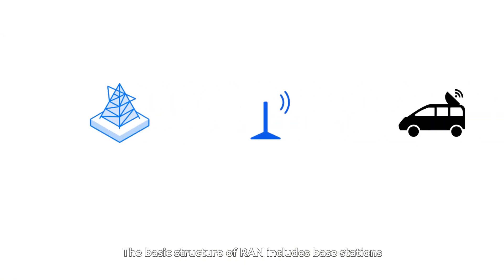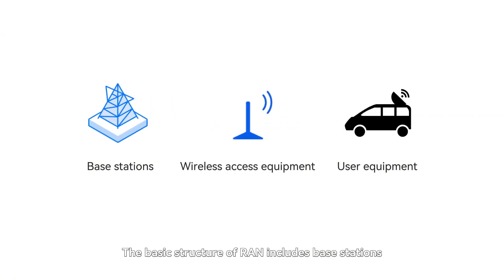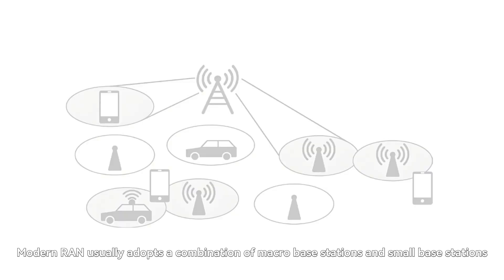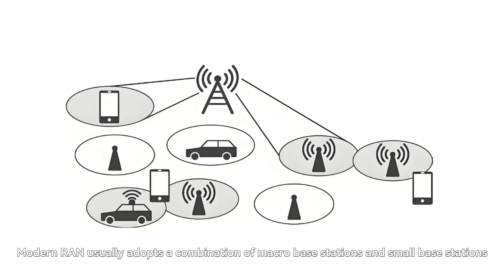The basic structure of RAN includes base stations, wireless access equipment, and user equipment. The base station is the core of RAN and is responsible for receiving and sending wireless signals. Modern RAN usually adopts a combination of macro base stations and small base stations.